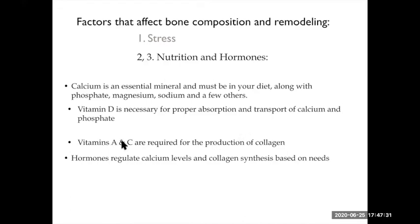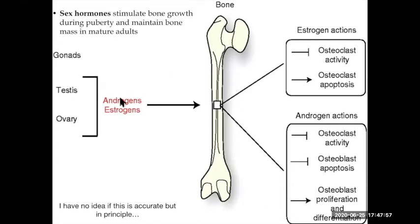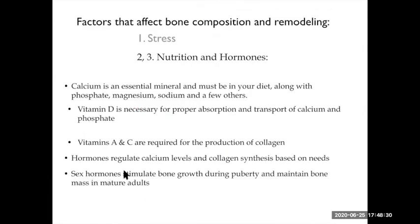One more thing about hormones: sex hormones — estrogen and testosterone — also play a big part in bone growth, especially during puberty. They stimulate that huge bone growth during puberty. Both estrogen and testosterone promote osteoblast activity in some fashion and decrease osteoclast activity, basically promoting bone growth by changing the balance of these two cell types.